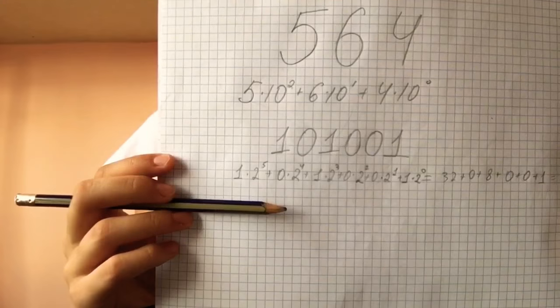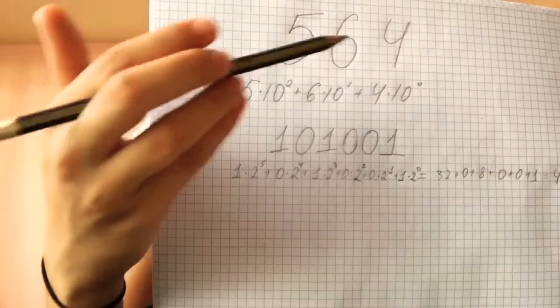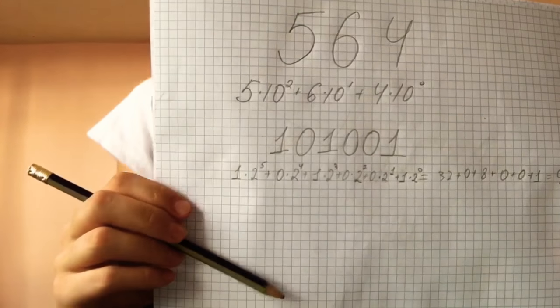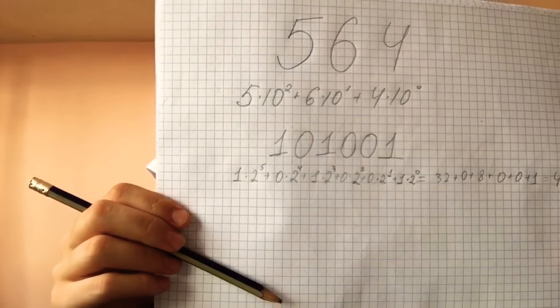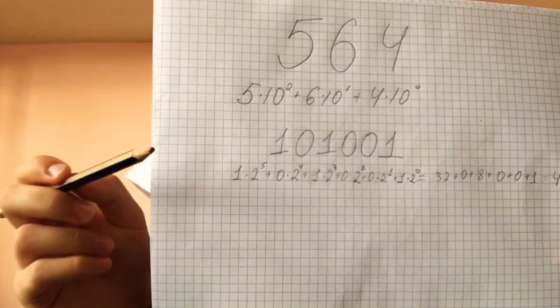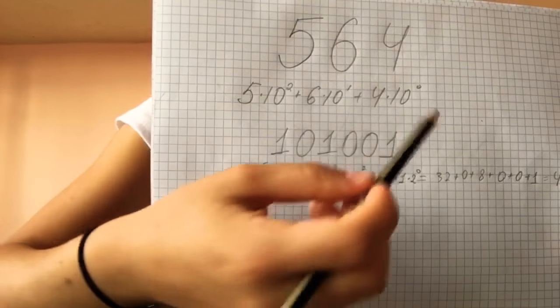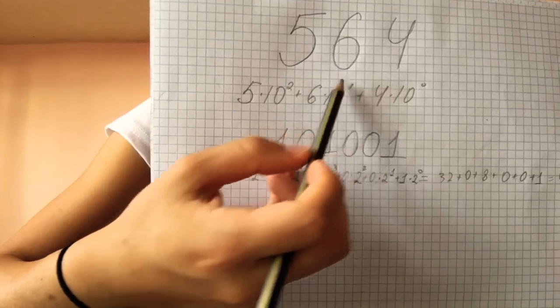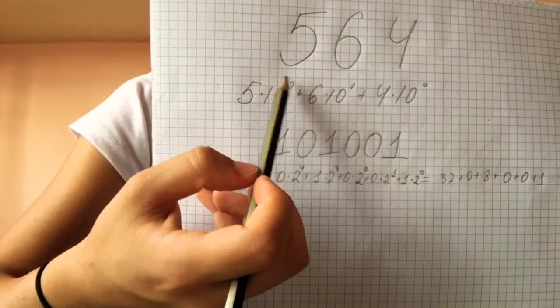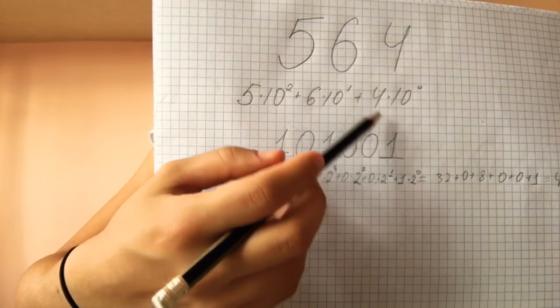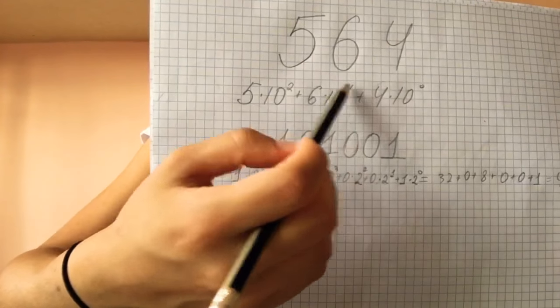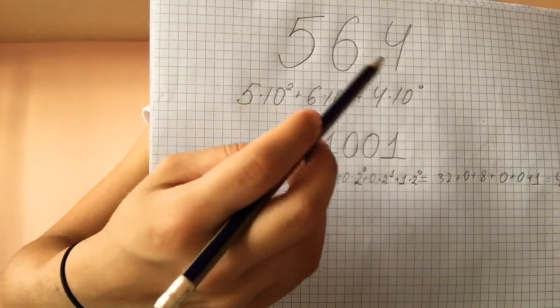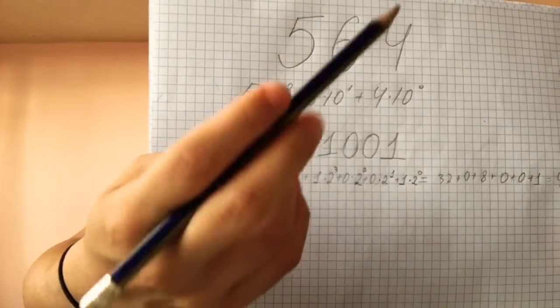Let's say we have the number 564. This is a number represented by the decimal system. Every digit in this number has its own place: four is at the ones place, six is at the tens place, and five is at the hundreds place.